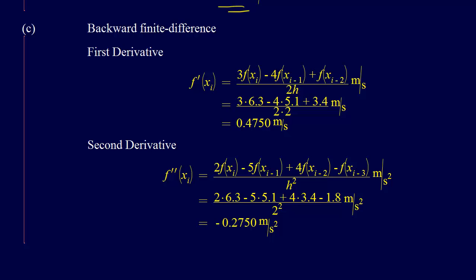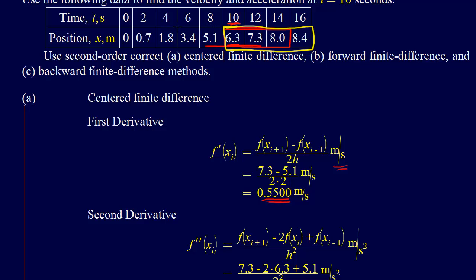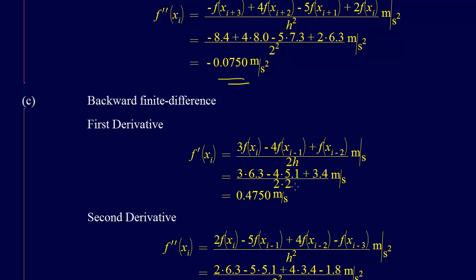Now part three, it's the same routine, but we're doing backward finite divided difference. Similar to the forward finite divided difference, for the first derivative we have to use three points to get the accuracy that we need. We're going to go the point that we're interested in, plus the point before, and two points before. So that's 3 times f at xi minus 4 times xi minus 1, plus f at xi minus 2. These three points here are the ones we're working with now, so 6.3, 5.1, and 3.4, divided by 2 times 2, so we get 0.475 meters per second.